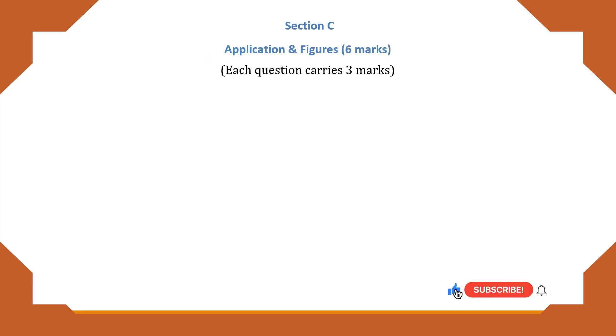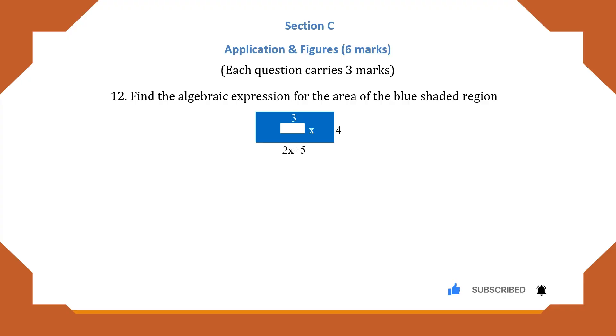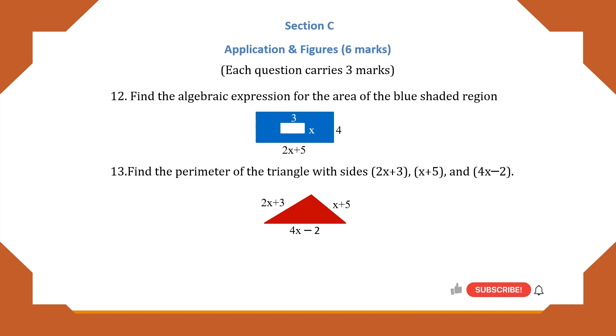Section C is application-based questions. There are 2 questions: one on area of rectangle and the other to find the perimeter of a triangle given 3 sides.